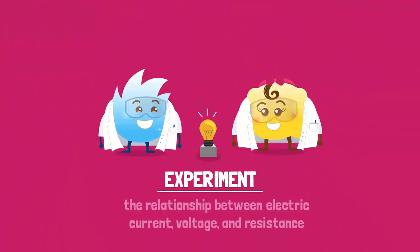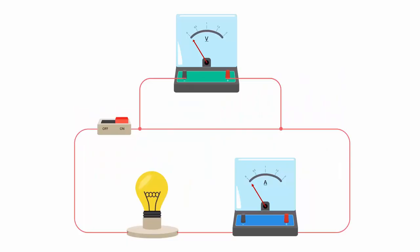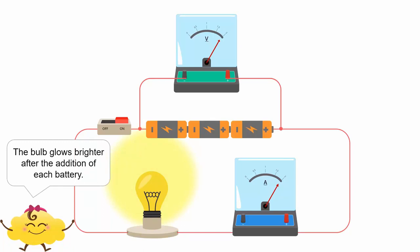Now, let's find the relationship between electric current, voltage and resistance through a simple experiment. What do you notice about the brightness of the bulb when we increase the number of batteries? The bulb glows brighter after the addition of each battery.